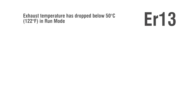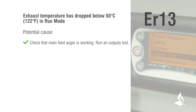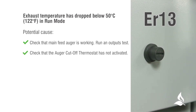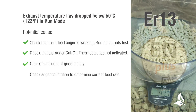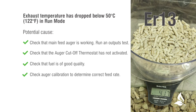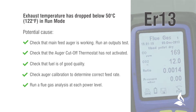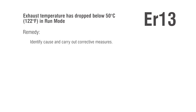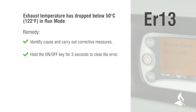ER13: Exhaust temperature has dropped below 50 degrees Celsius (122 degrees Fahrenheit) in run mode. Potential causes: check that the main feed auger is working — run an outputs test. Check that the auger cut-off thermostat has not been activated. Check that the fuel is of good quality. Check auger calibration to determine the correct feed rate. Run a flue gas analysis at each power level. Remedy: identify the cause and carry out corrective measures. Hold the on-off key for 3 seconds to clear the error, then restart the boiler.